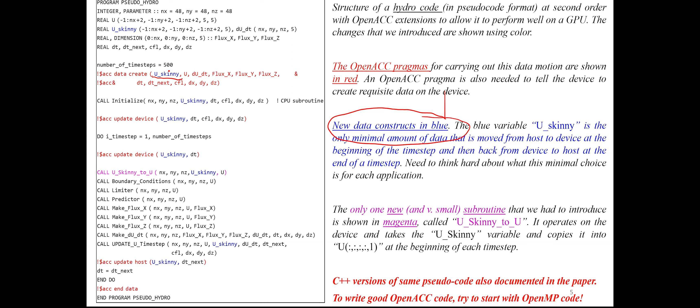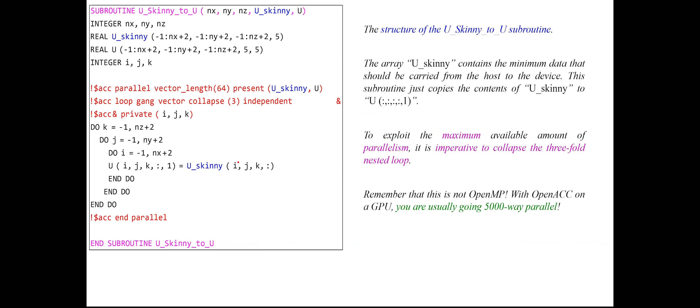This very small number of variables contains the minimal amount of data that needs to migrate from CPU to GPU and then back again after processing. In Magenta, you'll see the one and only new subroutine we had to introduce, so that we could actually go ahead and unpack the data we're moving to the GPU. That is the idea here.